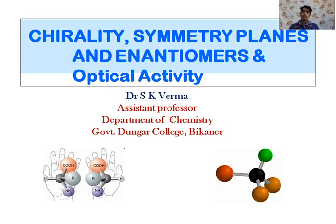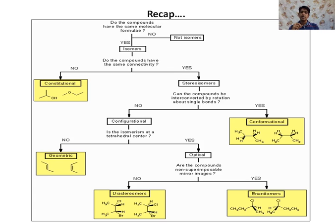Hello students, today we are going to discuss chirality, symmetry planes, enantiomers, and optical activity. This is my second lecture on stereochemistry. In our previous class we discussed the introduction to stereo isomers, constitutional isomers, stereo isomers, types of stereo isomers — configurational and conformational — and within configurational isomers, geometric and optical isomers, which are further divided into enantiomers and diastereomers.